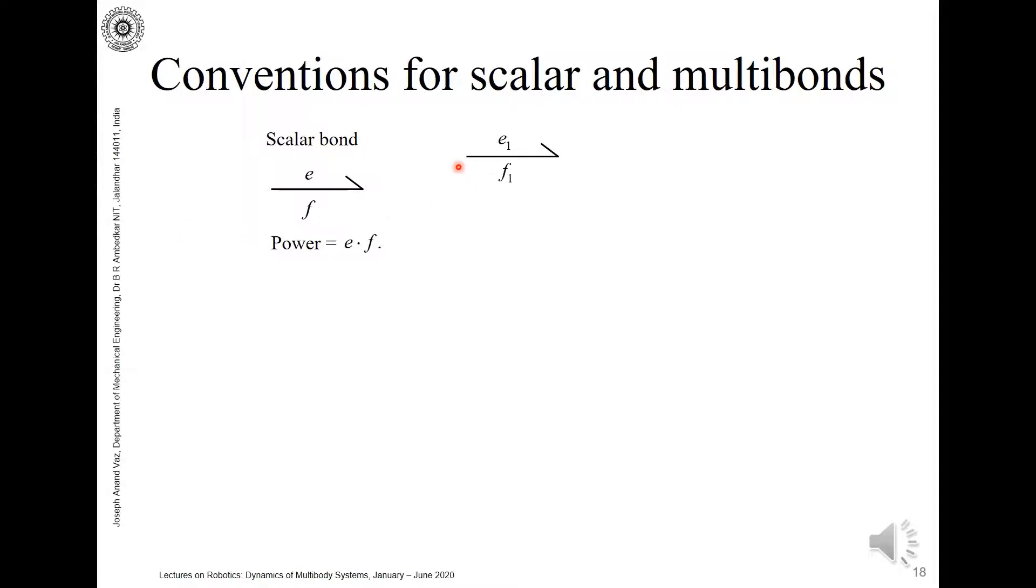If we have a set of such scalar bonds, say bond 1, bond 2, and so on up to bond n, we have n bonds in a particular order like this. We can represent it using a multibond, a multibond of cardinality n.